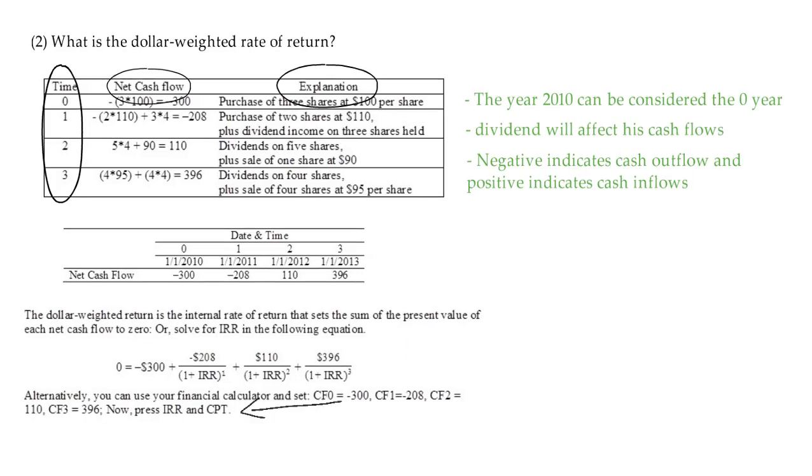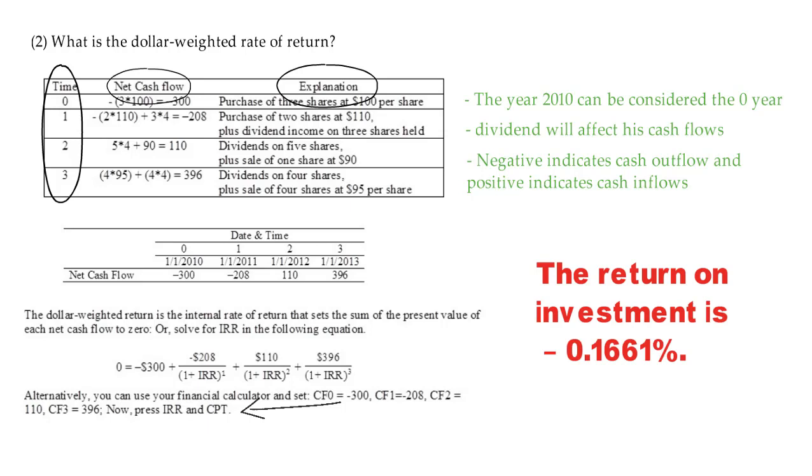Alternatively, you can use your financial calculator. You enter negative 300 as CF0, negative 208 as CF1, 110 as CF2, and 396 as CF3. Once you've entered all these cash flows, you press IRR and then press CPT. You get negative 0.1661%. So the dollar weighted return, or internal rate of return, is negative 0.1661%.